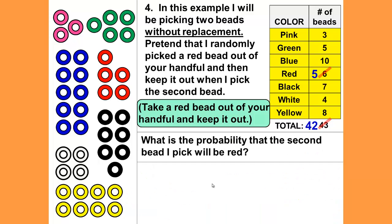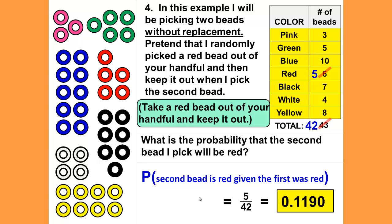What is the probability that the second bead I pick will be red? Again, we're just looking at picking a red bead now that I've picked the first red bead—just one red bead. We only have five out of 42, which gives us 0.1190.